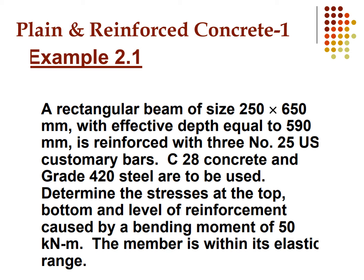Let me draw the cross section. We have a beam with a height of 650 mm and a width of 250 mm. There are 3 reinforcement bars placed at the bottom, and the size of each reinforcement bar is 25 mm.